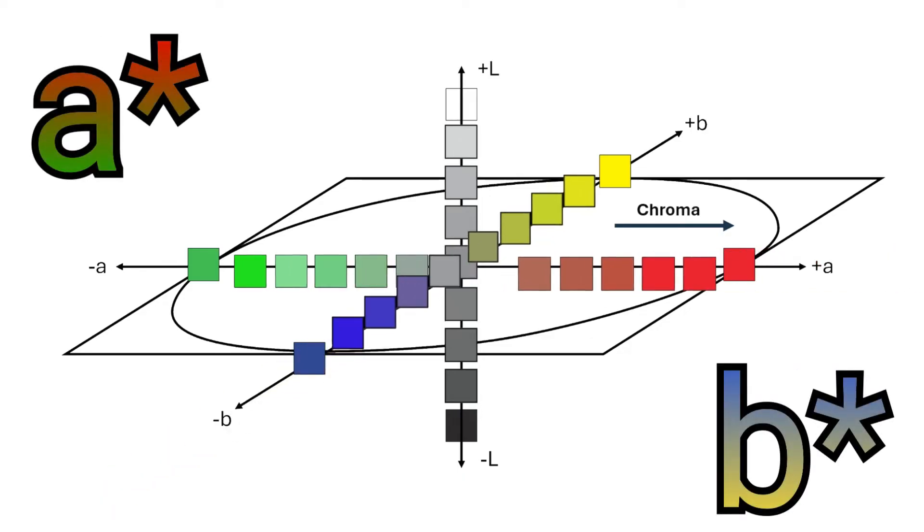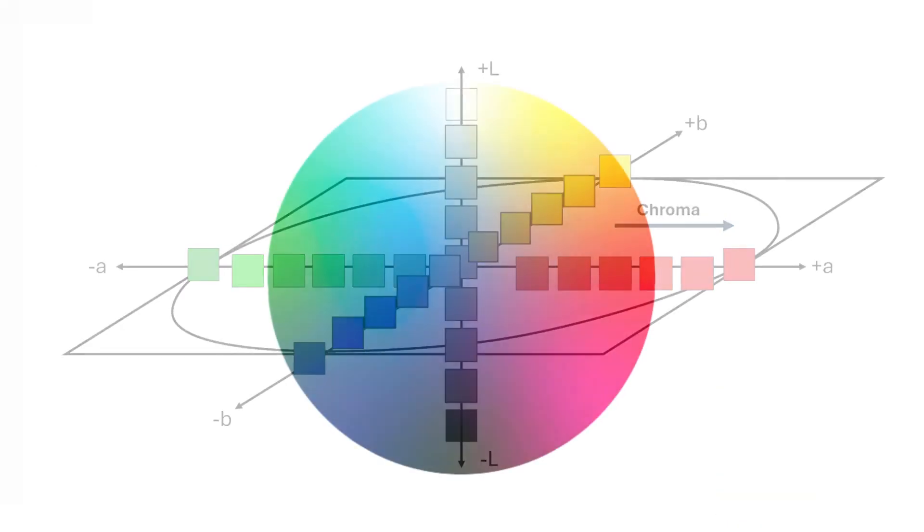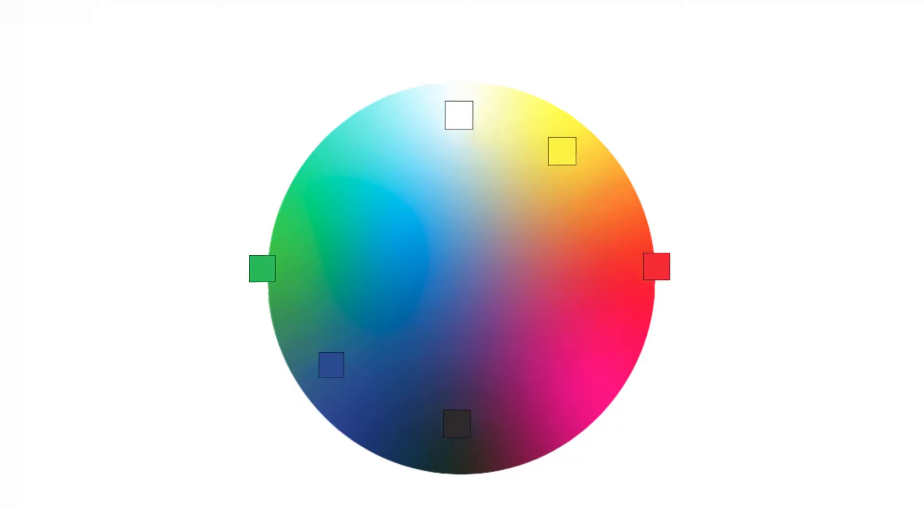A and B denote chromaticity, the hue and chroma of a color. These axes are located on the X and Y planes, where A ranges from green to red, while B spans from blue to yellow. Filling this model reveals a three-dimensional color map.